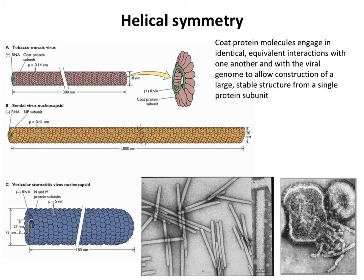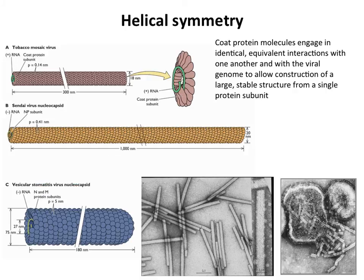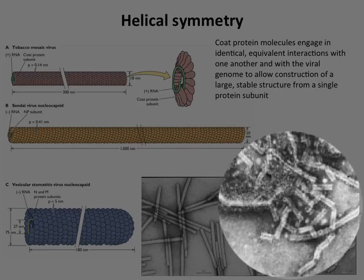There are versions of this helical structure in viruses that infect animals. Sendai virus, a paramyxovirus related to measles virus, also has a nucleocapsid made up of a single protein that interacts with itself and with the RNA — it's a bit longer than the TMV capsid. Here on the lower right is a photograph of a measles virus particle, also related to Sendai. The measles virus nucleocapsid is helical as well; you can see this particle is broken, allowing the EM dye to stain the helical nucleocapsids inside.